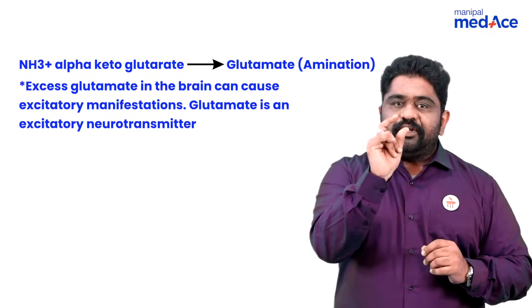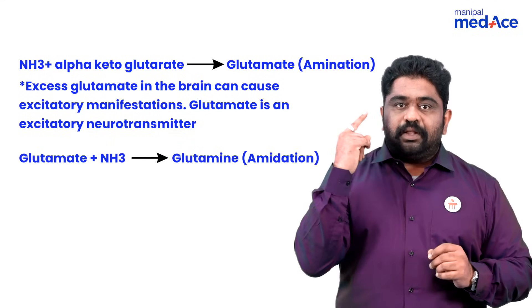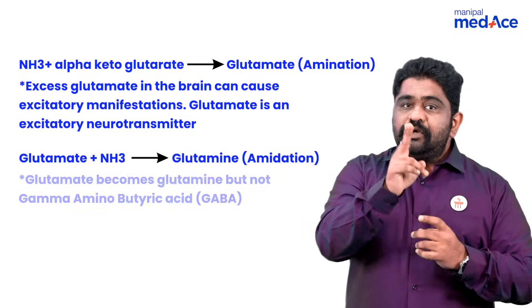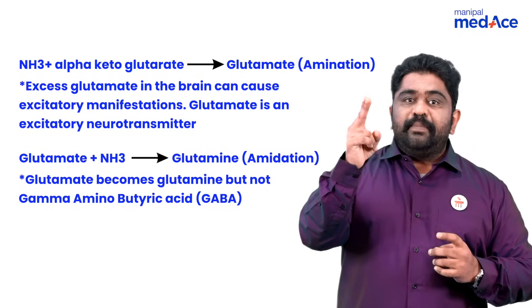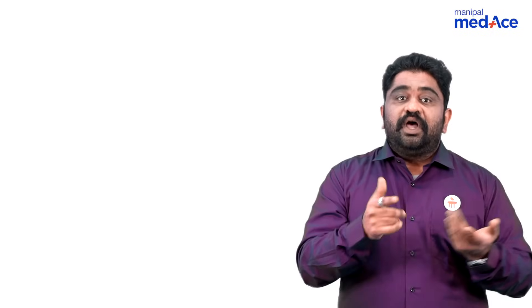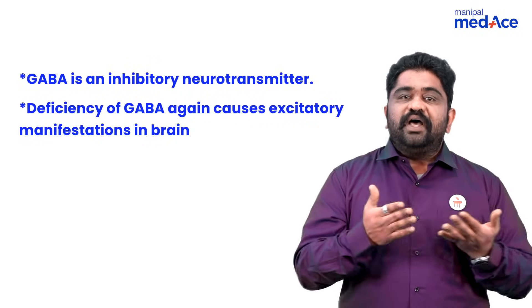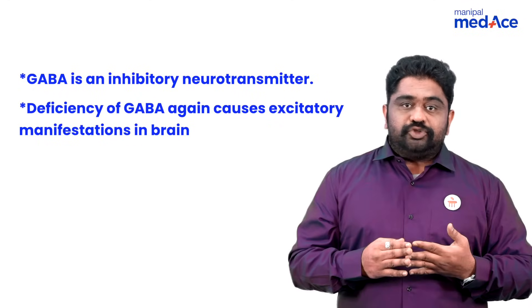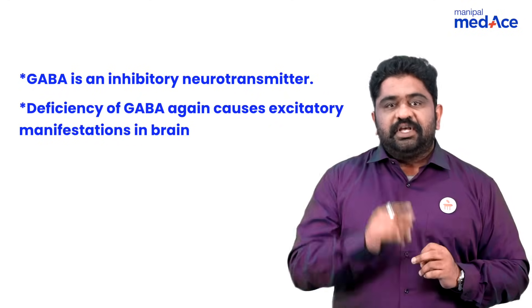Now this alpha-ketoglutarate, after becoming glutamate in the brain, can accept one more ammonia as an amide bond to become glutamine. When glutamate is becoming glutamine, the ability of glutamate to go for decarboxylation to become GABA is reduced. GABA is not formed. GABA is gamma-aminobutyric acid, an inhibitory neurotransmitter. If the inhibitory neurotransmitter is not formed, again excitation happens. This glutamate as an excitatory neurotransmitter will cause seizures, the same as in the formation of poor amounts of GABA.